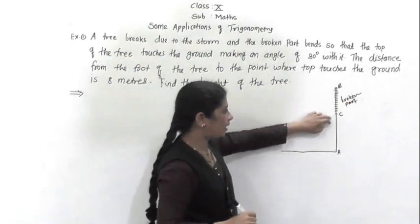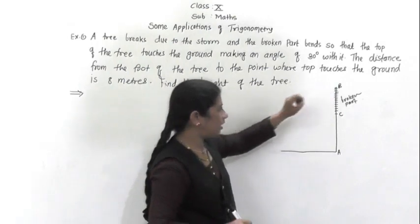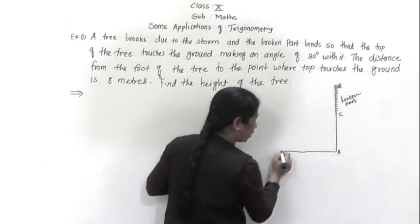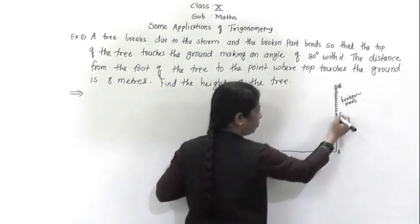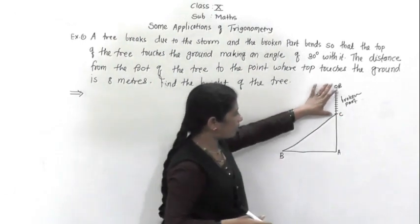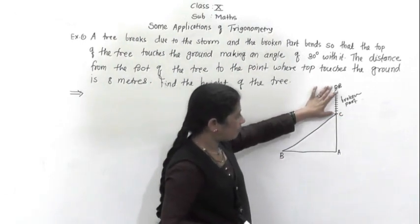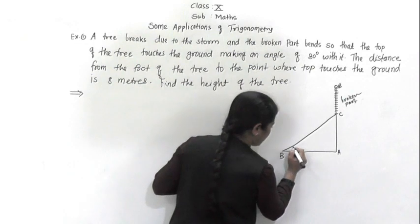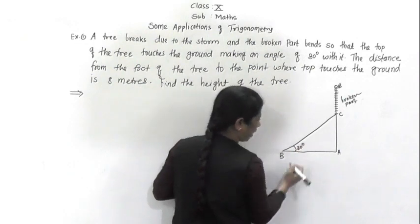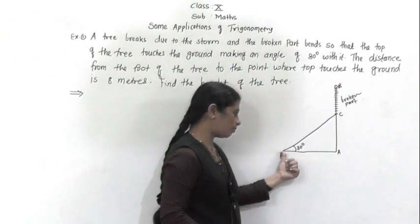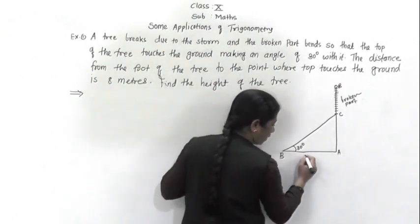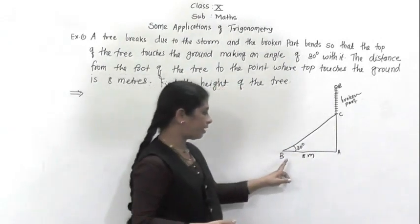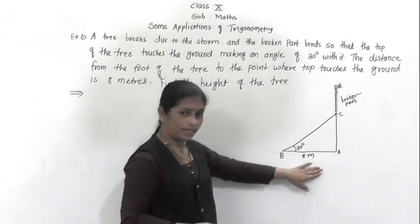When it breaks at this point, the top of the tree touches the ground. This top point will come here to touch — this point will come to B. And from point C, the part BC will take the position of point B. When it touches the ground, it makes a 30 degree angle. The distance from point A to B is 8 meters — that is, from the foot of the tree to the point where the top touches, which is 8 meters.